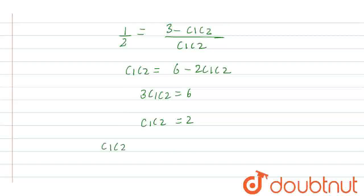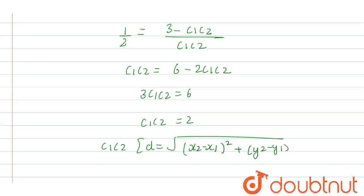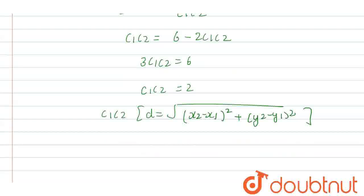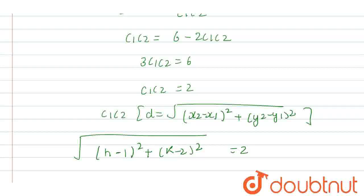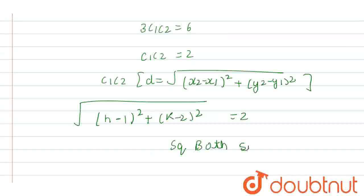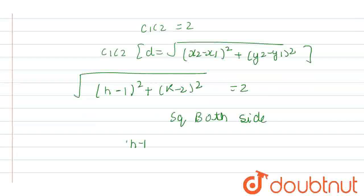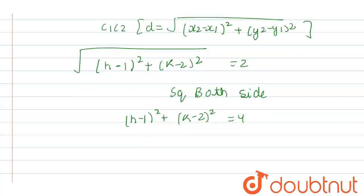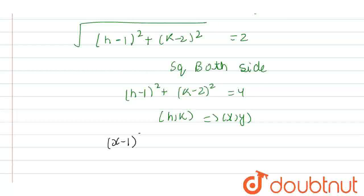To find C1C2 using the distance formula: d = √[(x₂ - x₁)² + (y₂ - y₁)²]. We have taken C2 coordinate as (h, k), so C1C2 = √[(h - 1)² + (k - 2)²] = 2. Now, squaring both sides, our locus becomes (h - 1)² + (k - 2)² = 4. Replacing h and k with x and y, the final locus is (x - 1)² + (y - 2)² = 4.